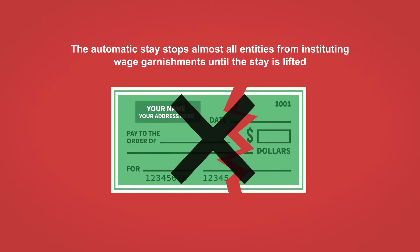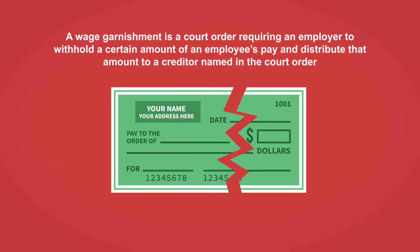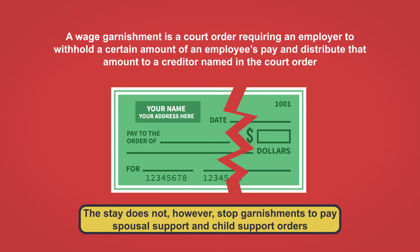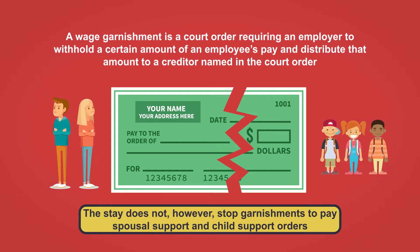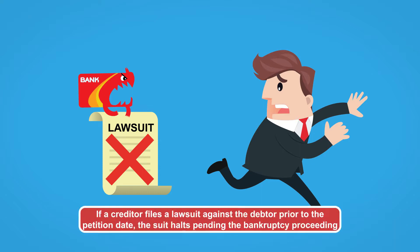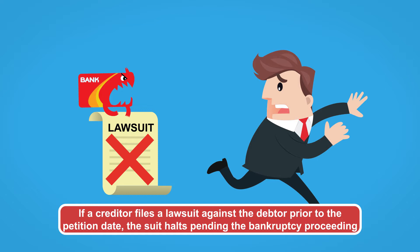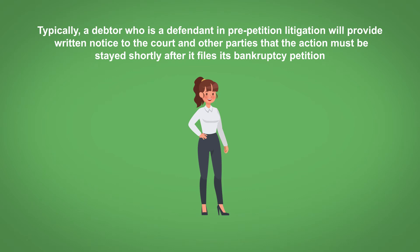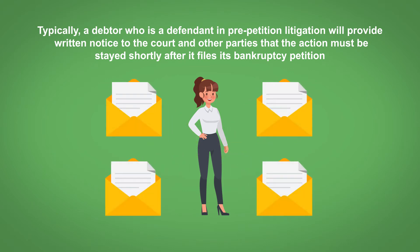The automatic stay stops almost all entities from instituting wage garnishments until the stay is lifted. A wage garnishment is a court order requiring an employer to withhold a certain amount of an employee's pay and distribute that amount to a creditor named in the court order. The stay does not, however, stop garnishments to pay spousal support and child support orders. Also, after the debtor files for bankruptcy, a creditor can't continue to litigate a pending lawsuit against the debtor to recover on claims that arose before the filing. If the creditor files a lawsuit against the debtor prior to the petition date, the suit simply halts pending the bankruptcy proceeding. Typically, a debtor who is a defendant in pre-petition litigation will provide written notice to the court and the other parties that the action must be stayed shortly after it files the bankruptcy petition.